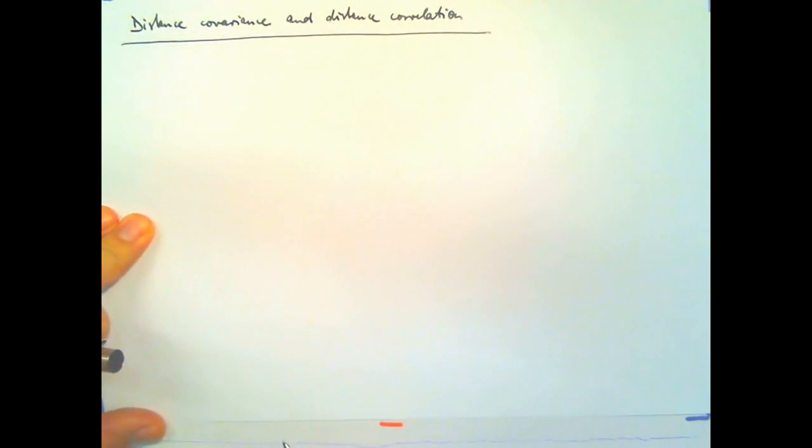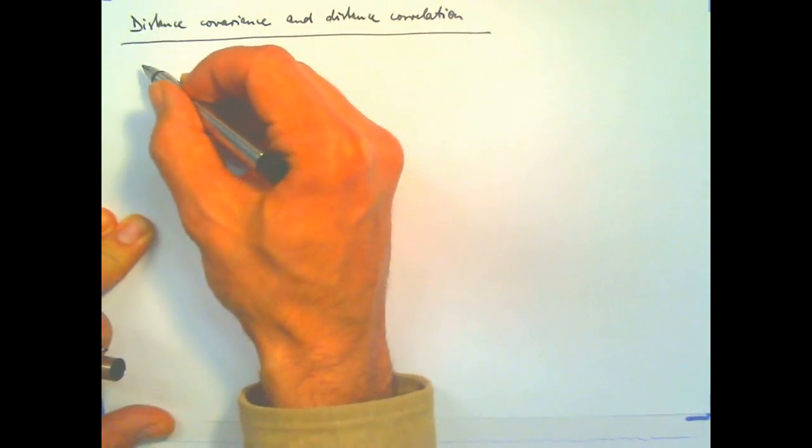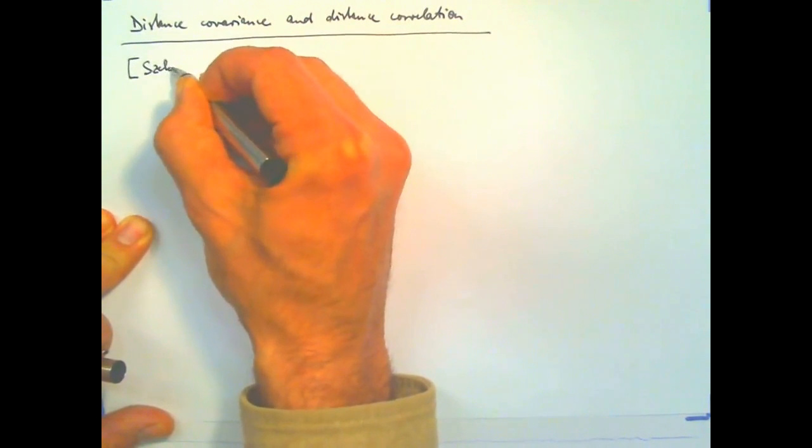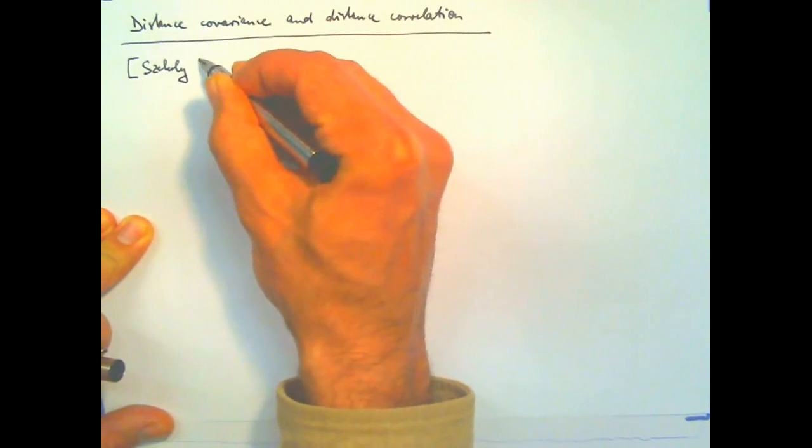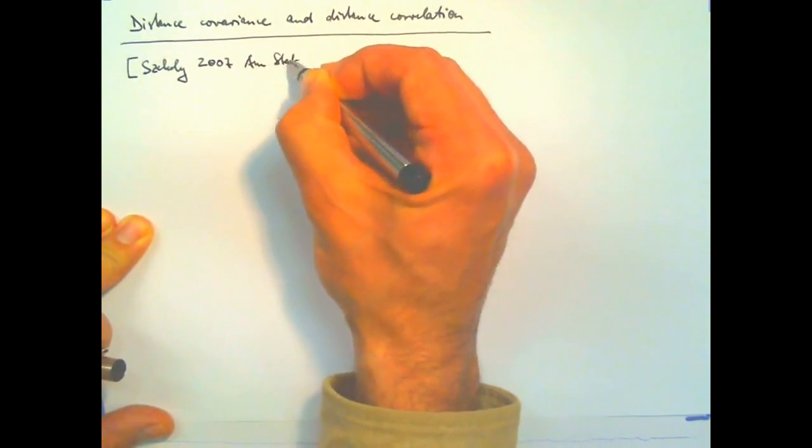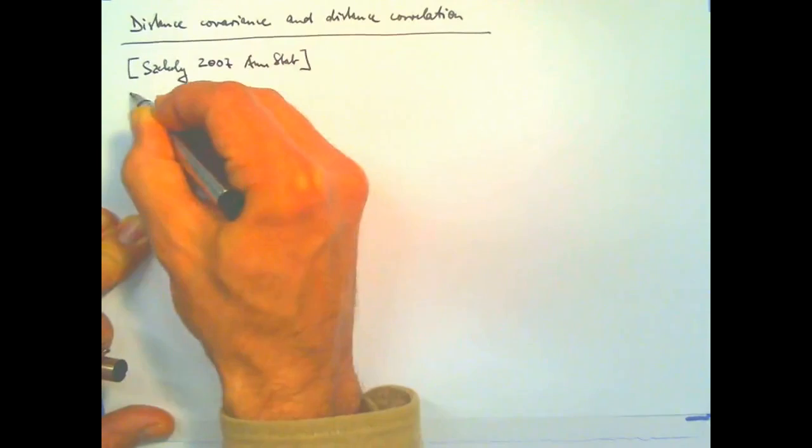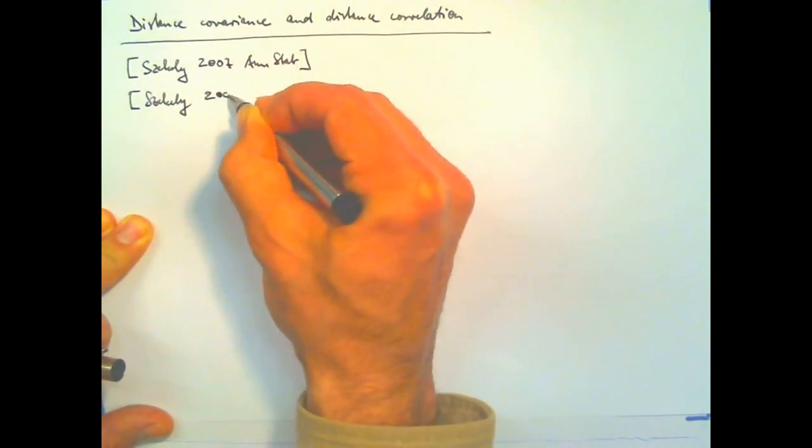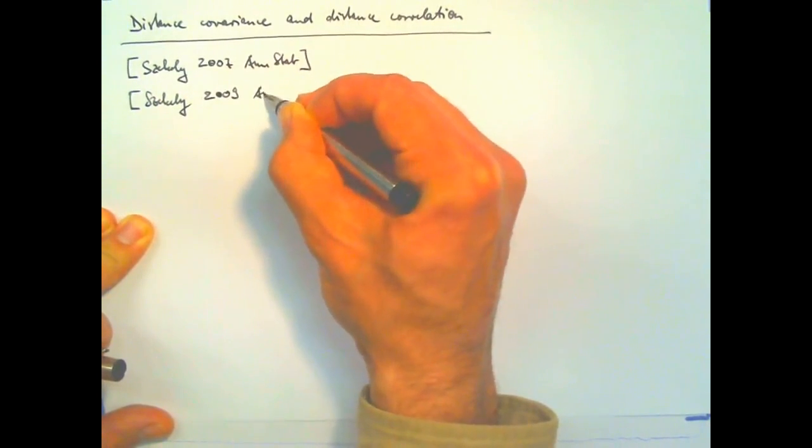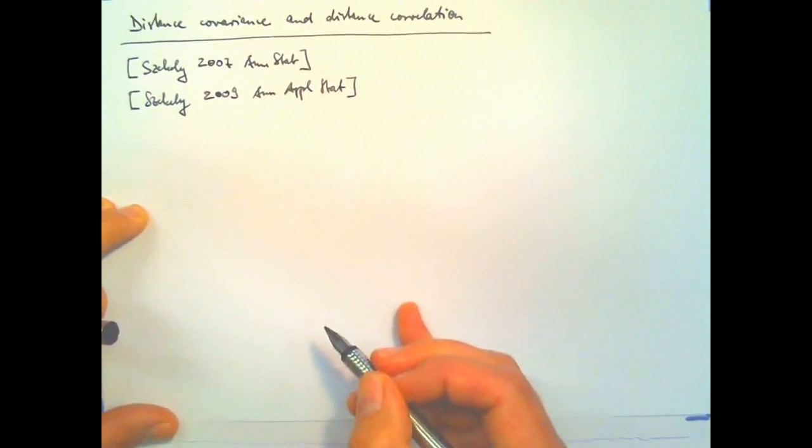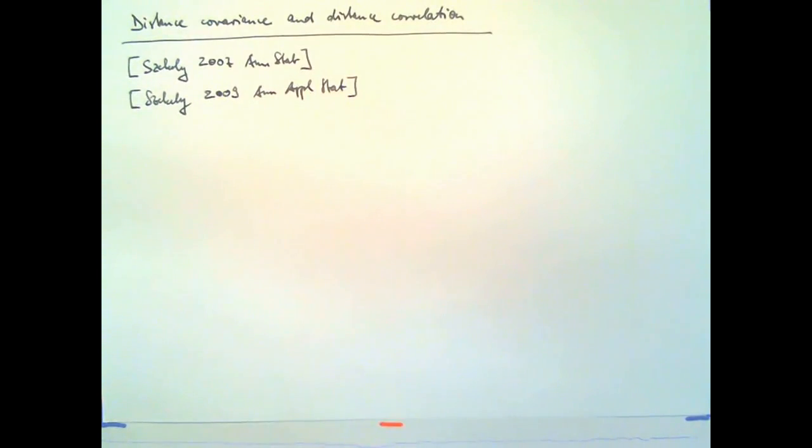So these entities, they have been advertised under a number of names. But apparently the ones that are going to stick are distance covariance and distance correlation. And this is, there are two papers on this. There's one by Schickely and co-authors in 2007 in the Annals of Statistics. And then again Schickely and Rizzo in 2009 in the Annals of Applied Statistics. This is the paper from the discussion of which I have copied this article.